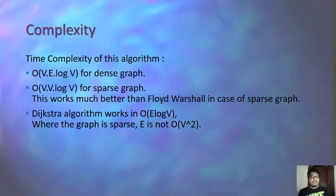Checking the time complexity of Johnson's algorithm: for dense graphs the complexity is O(VE log V), and for sparse graphs it is O(V² log V), which is much better than the Floyd-Warshall algorithm in the sparse case. Dijkstra's algorithm has a time complexity of O(E log V), but when the graph is sparse E approaches V², making it O(V²). Thank you for watching this presentation.